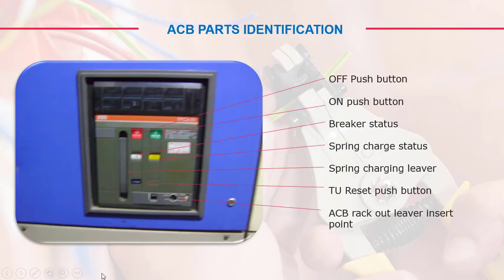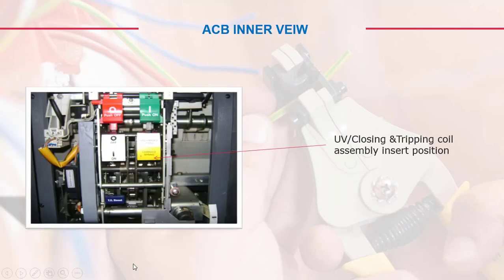Now let's identify the main parts of the air circuit breaker. You can see the red off push button and the green on push button. There is the ACB breaker status indicator and a spring charge status indicator. A spring charging lever is also available. There is a TU reset push button, an ACB rack-out lever, and an insert point. Inside the ACB, you can see the undervoltage and overvoltage protection, and the tripping coil assembly at the insert position.